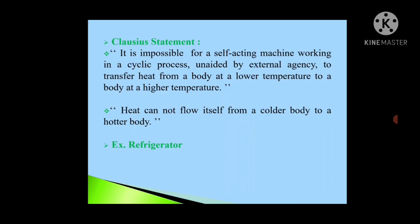Now, Clausius statement. It is impossible for self-acting machine working in cyclic process, unaided by external agency, to transfer heat from body at low temperature to body at high temperature. Means, simply we can say heat cannot flow itself from colder body to hotter body.